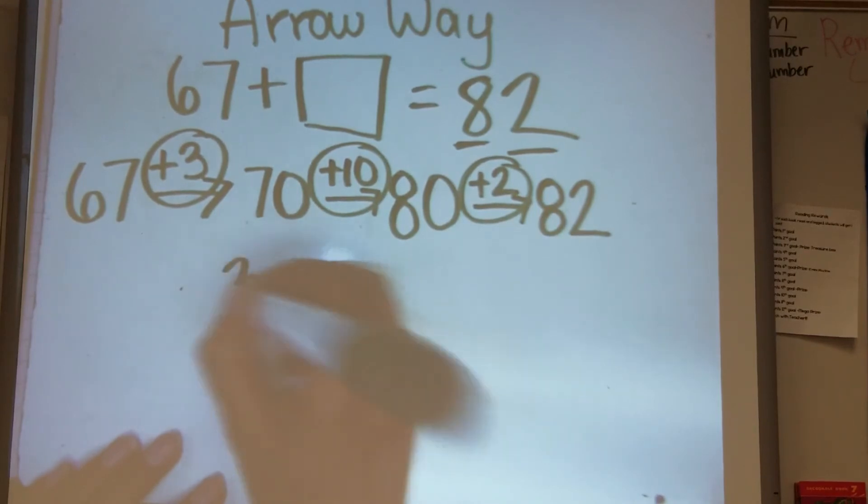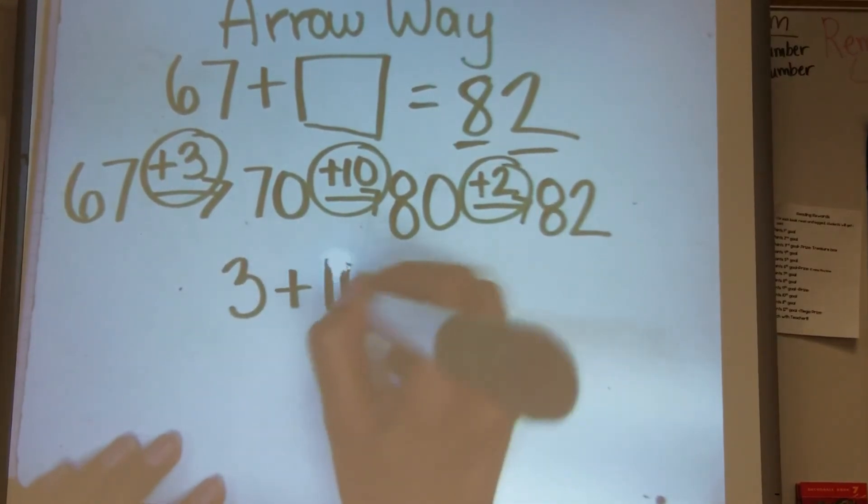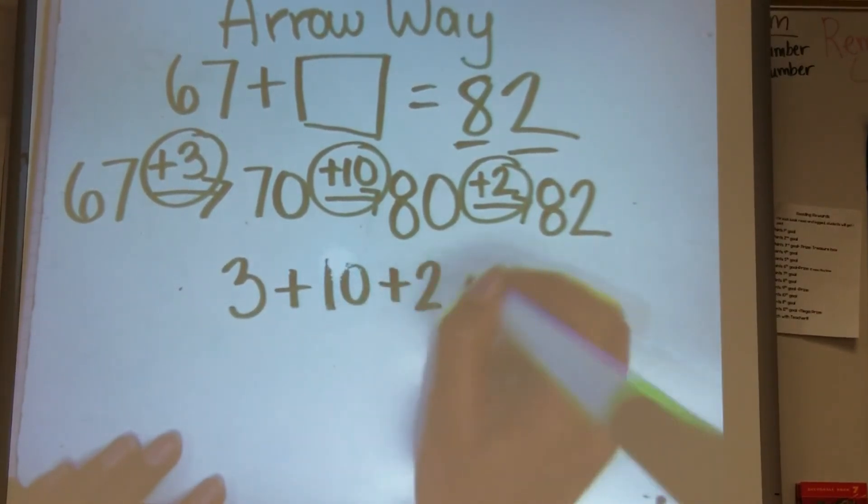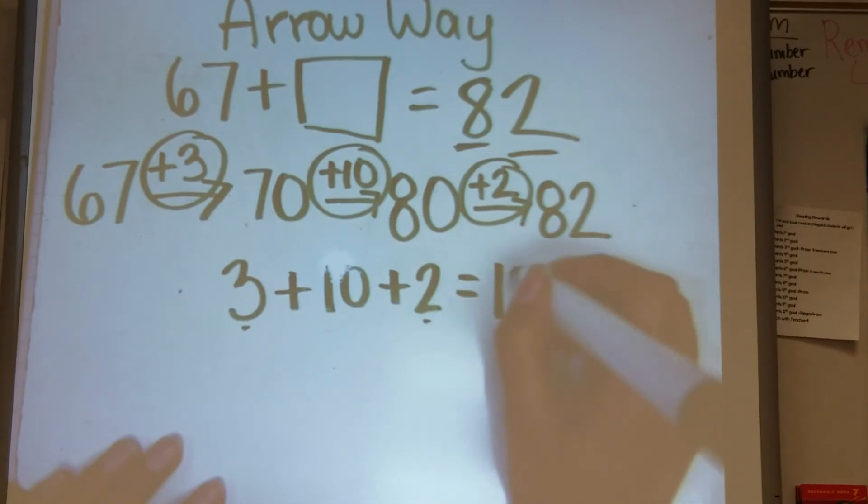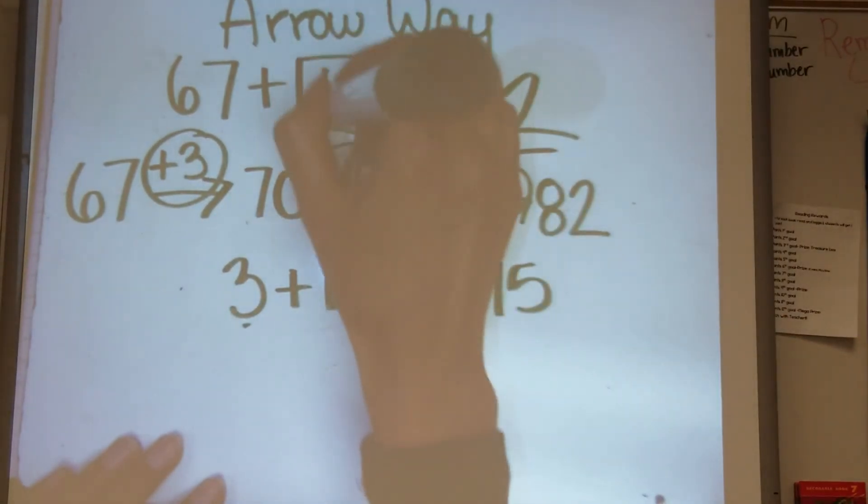So just to show you, that's 3 plus 10 plus 2. 3 plus 2 is 5, 5 plus 10 is 15. The answer is 15.